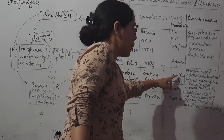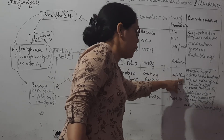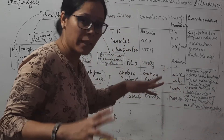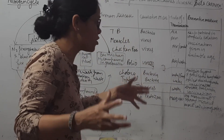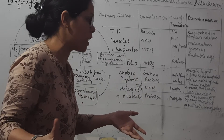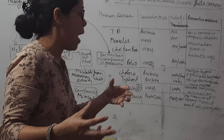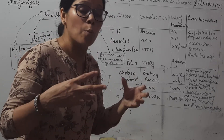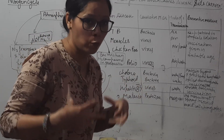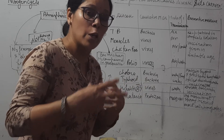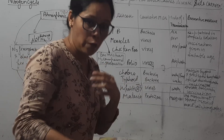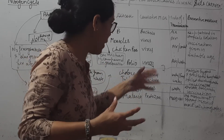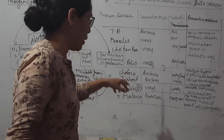Cholera is caused by bacteria spread through water and food. Prevention requires maintaining complete hygiene, good sanitation habits, using boiled drinking water, and properly cooked food. If we follow these conditions, we can prevent cholera.